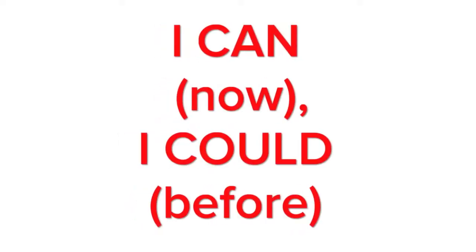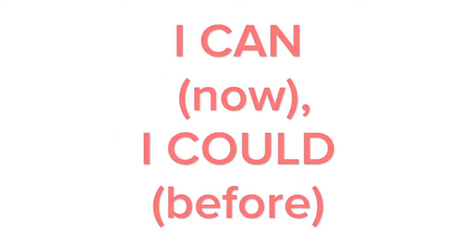For example, can and could. Could is the past tense of can. For example: I could play the piano when I was younger, but now I can't. So can is your ability or capability right now, and could is what you were able to do previously. That is the main definition of could — the past tense of can.